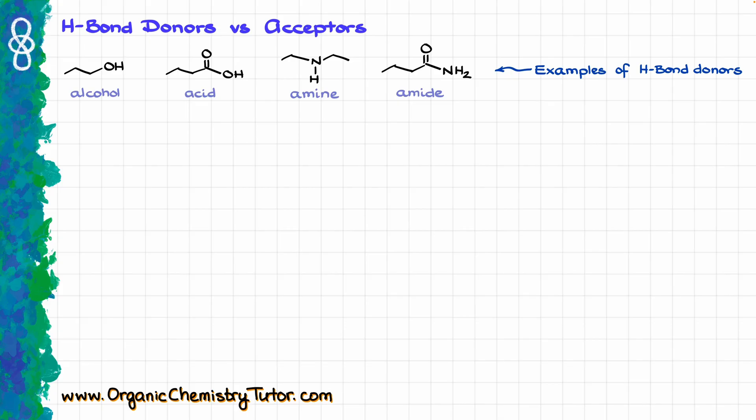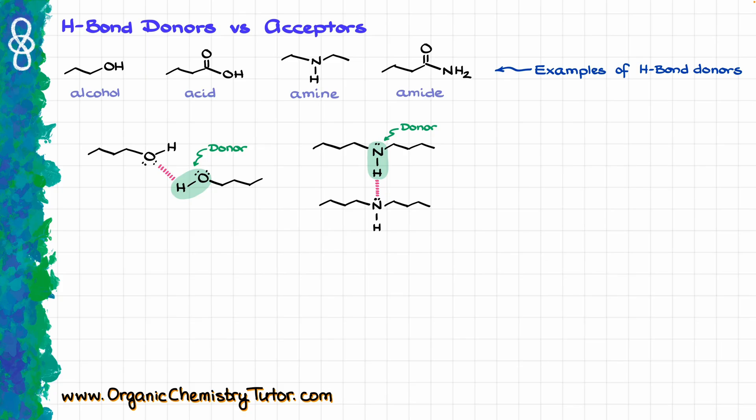All the functional groups I just mentioned are going to be both hydrogen bond donors and hydrogen bond acceptors. The group with the hydrogen is the hydrogen bond donor, and the one that provides the electron pair is the hydrogen bond acceptor. So the same group can potentially be both donor and acceptor.